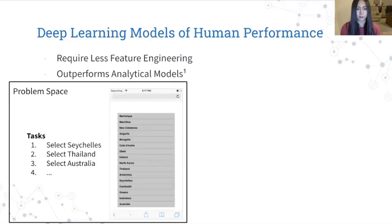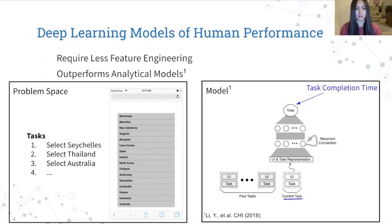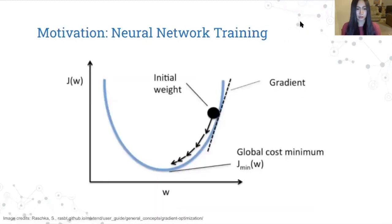For instance, Lee et al created a model that takes in a menu and a sequence of menu items to select, and will predict how long it takes to select each item in the sequence. A common way to train neural networks to fit a data set is with gradient descent, where gradients of the loss function with respect to the model's weights can be used to update the weights to minimize the loss function.